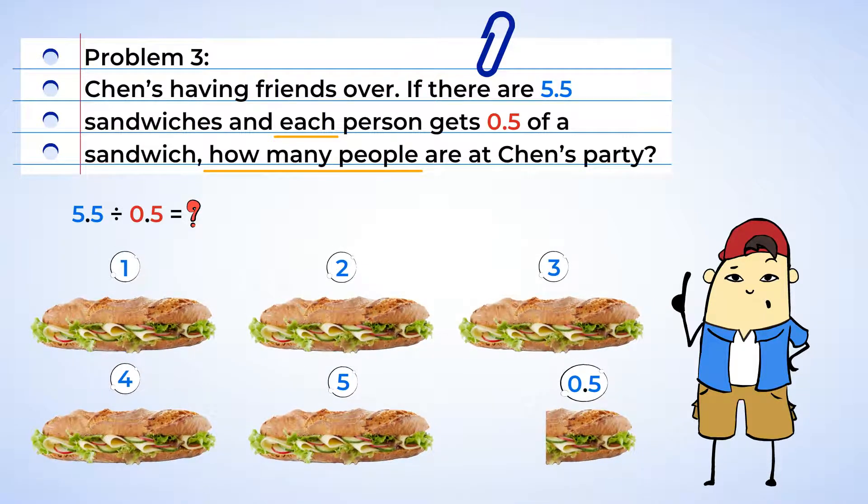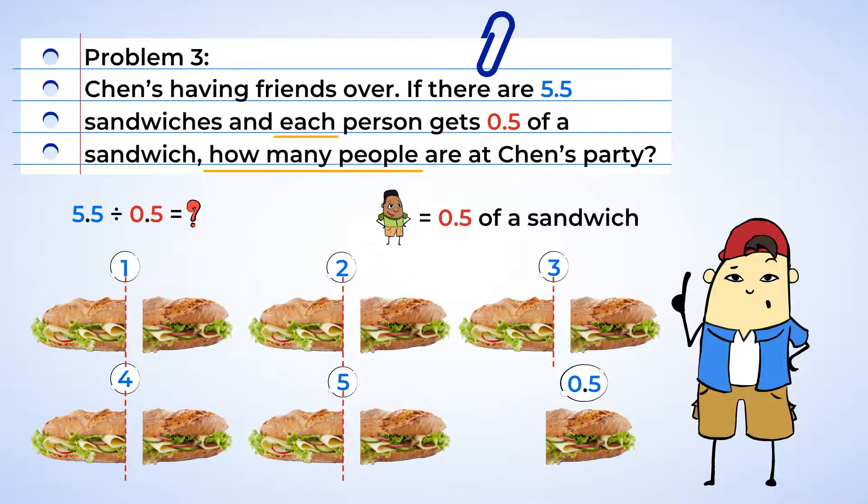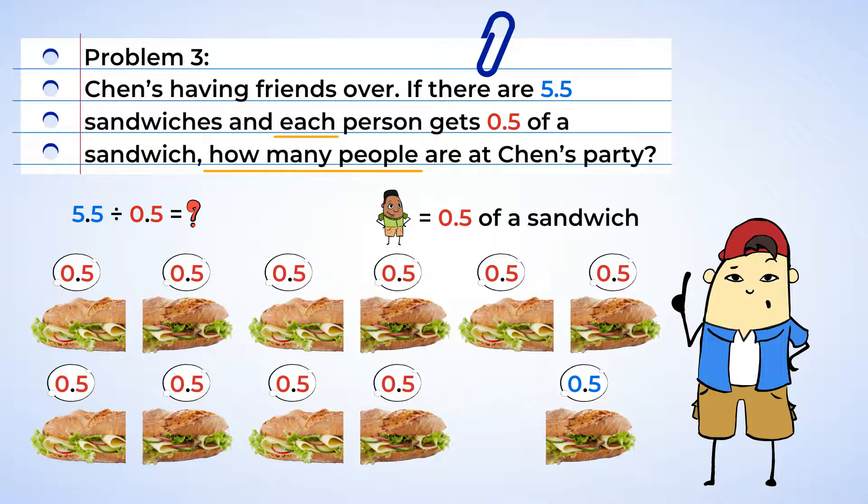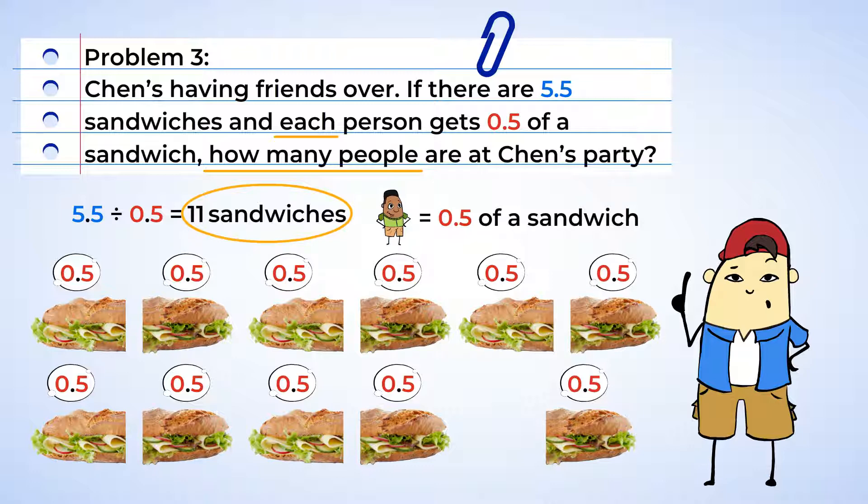Here are the five and a half sandwiches. If each person gets a half of a sandwich, then we'll need to show how many groups of one half there are in five and a half. And each of the whole sandwiches has two halves. That gives us ten halves. And now we can add the extra half to get eleven. And that means that there are eleven sandwiches available, so eleven people can eat.